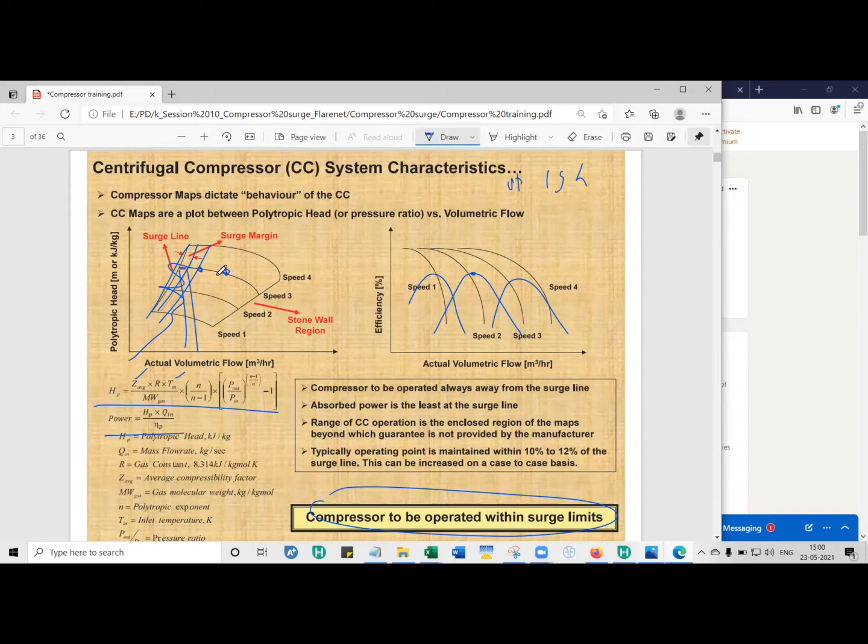When a manufacturer provides you with the performance curves, the polytropic head versus the actual volumetric flow rate, the operating point must operate as close as possible to the maximum efficiency. At lower efficiencies, you require more power to compress the gas. And on a final note, always operate the gas compressor within the allowable limits to prevent mechanical damage.